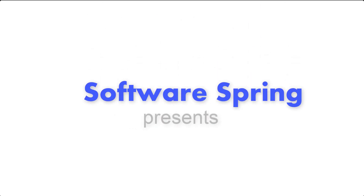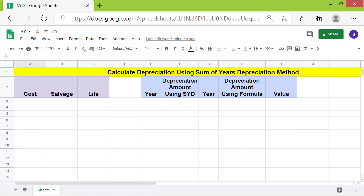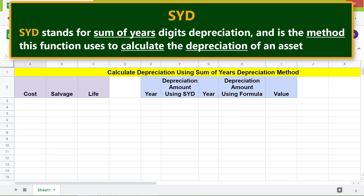Welcome to this tutorial on the SYD function in Google Sheets. SYD stands for Sum of Years Digits depreciation, and it is the method this function uses to calculate the depreciation of an asset.